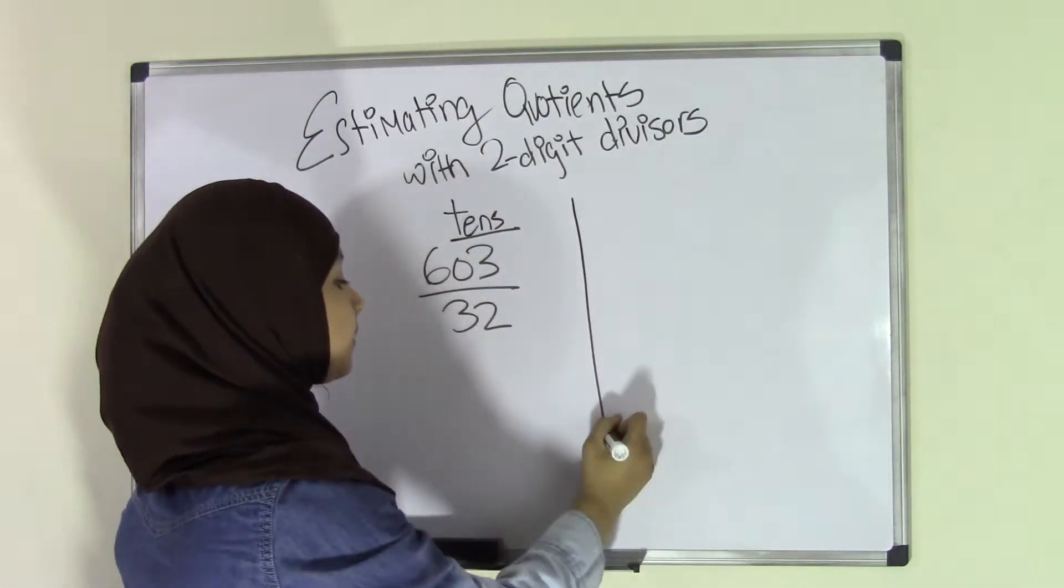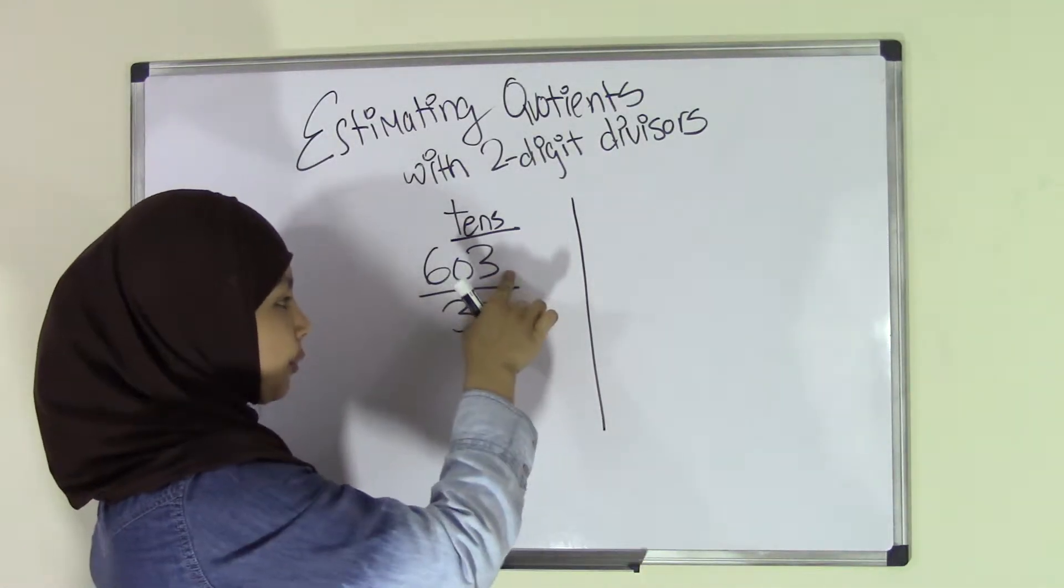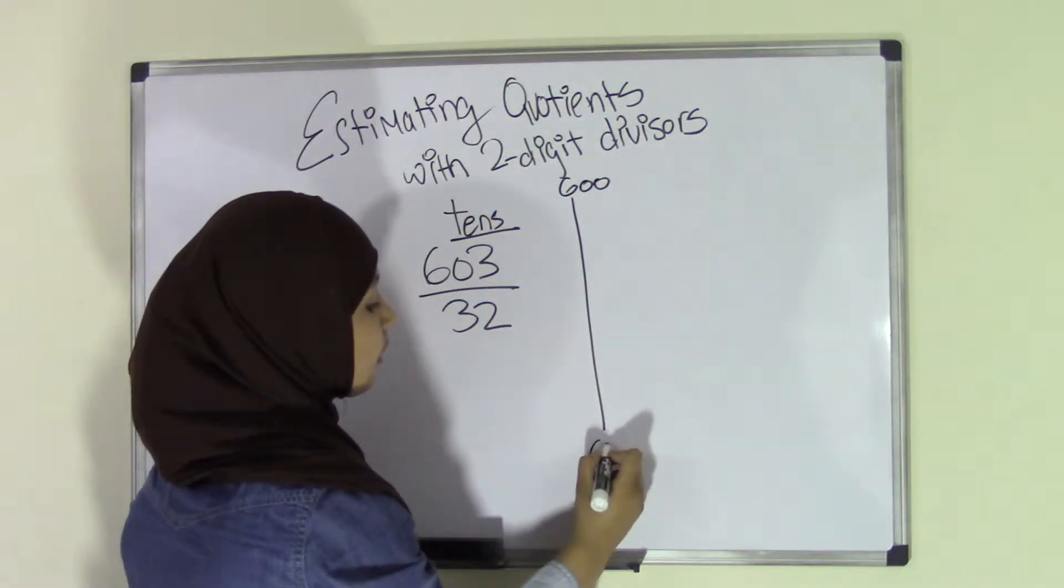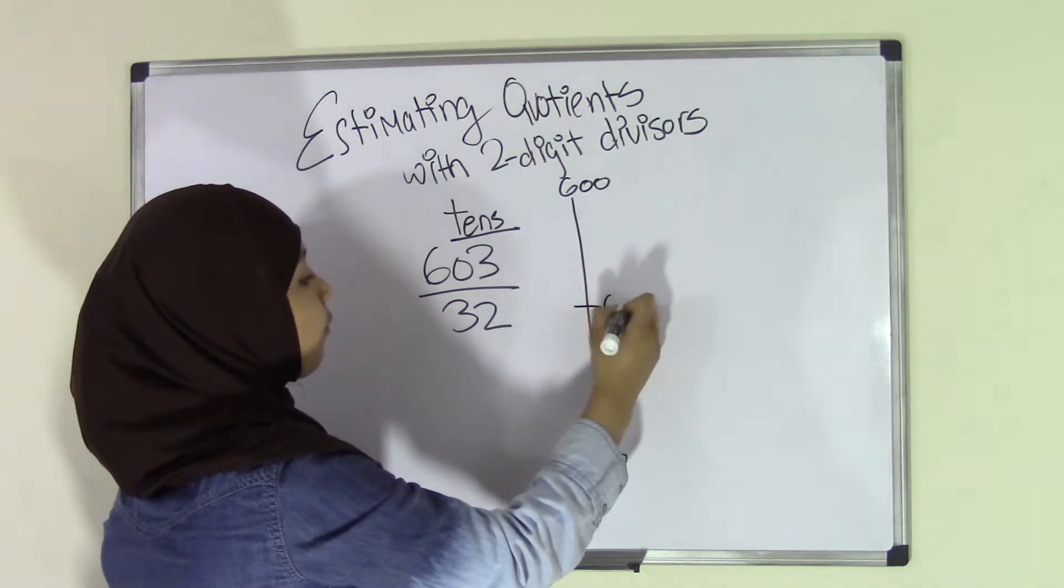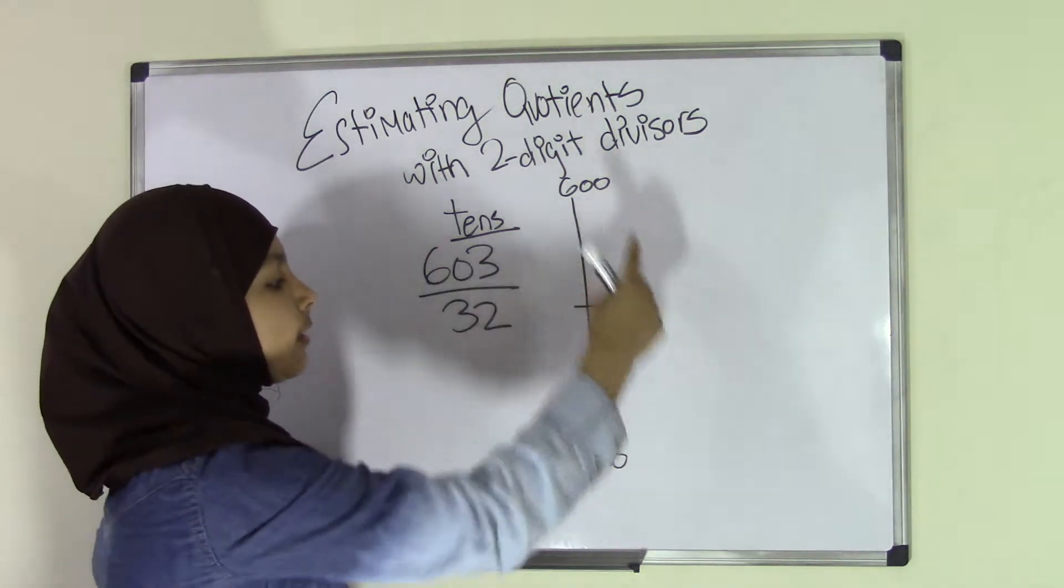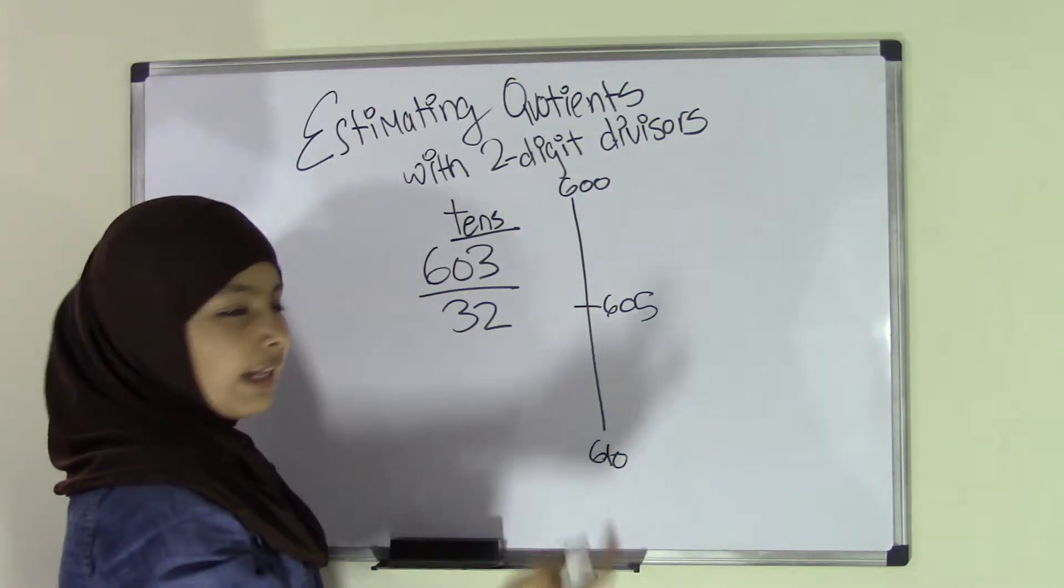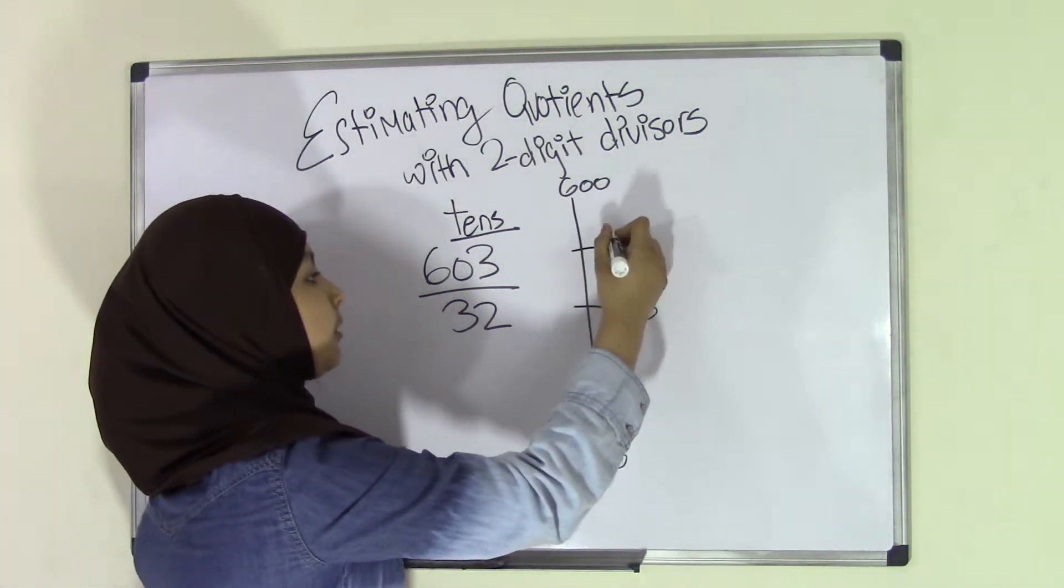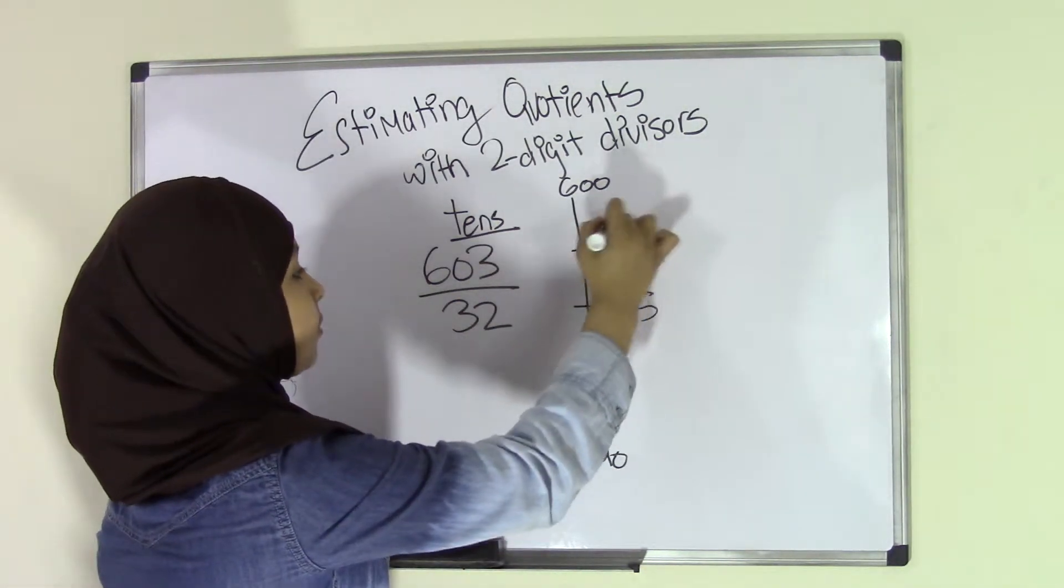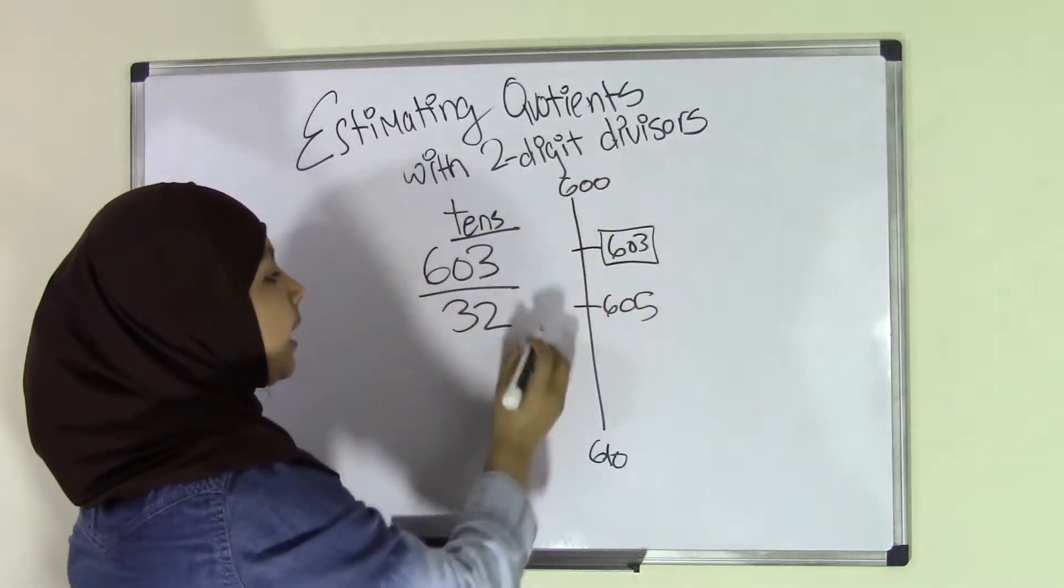We're going to make a line here for 603 first. So up here will be 600, and then here will be 610, and in the middle will be 605. Now, where would you place 603 in this set of data? More than likely, it will go over here. So, 603. Now we can see that 603 here, let's make a square around this, is closer to 600.